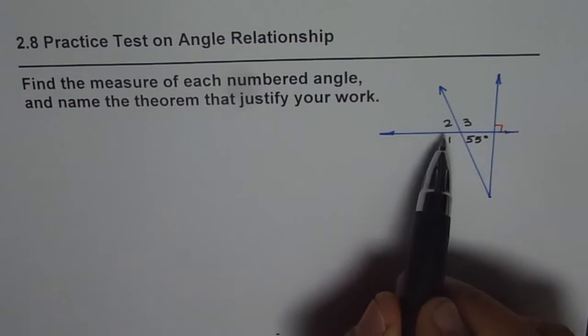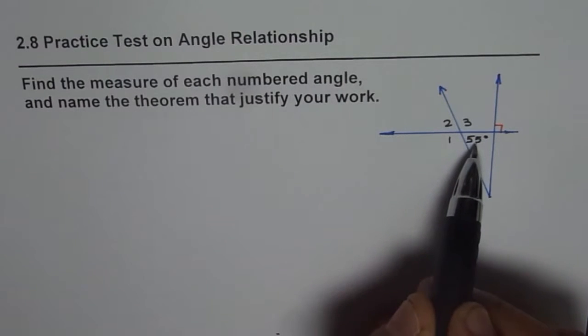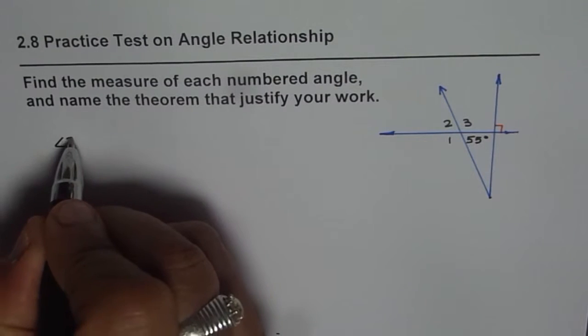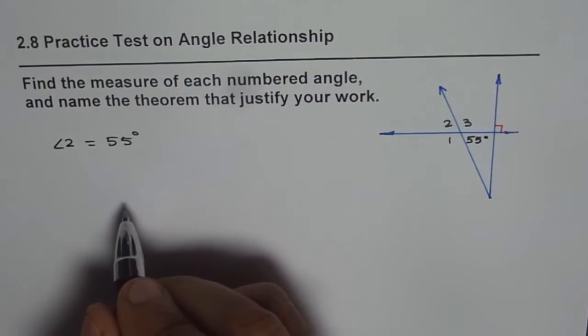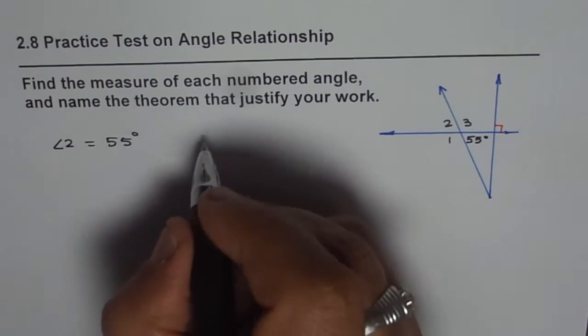As you can see, angle 2 and 55 degrees are vertically opposite angles. They should be equal. So we have angle 2 is equal to 55 degrees, and the reason for this is vertical angles theorem.